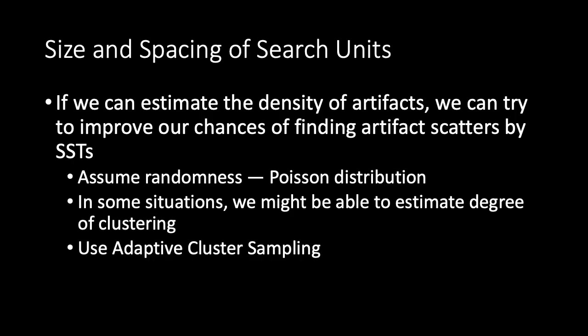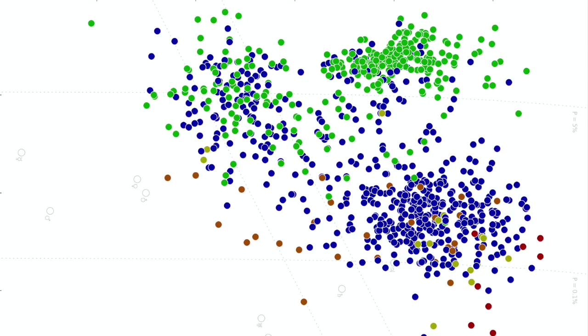On the other hand, it's fairly likely that the artifacts on a site will not be randomly distributed and instead will be clustered in some way. The more clustered the artifacts are, the more likely it is that many of the shovel tests will intersect empty space even when they're on a site. Consequently, we may have to anticipate this by using larger or more closely spaced shovel tests than we would have predicted with the Poisson model.